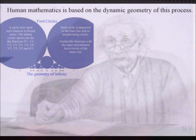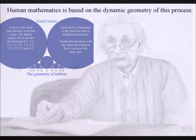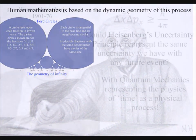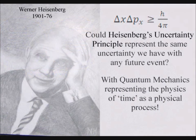This represents the probability and uncertainty of everyday life that, at the smallest scale of this process, is represented mathematically by Heisenberg's uncertainty principle of quantum mechanics.